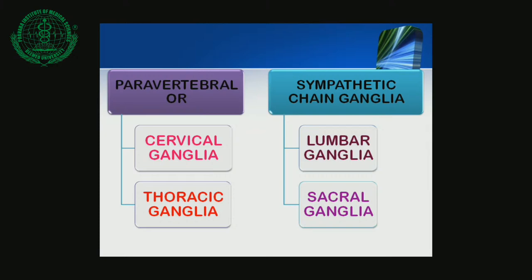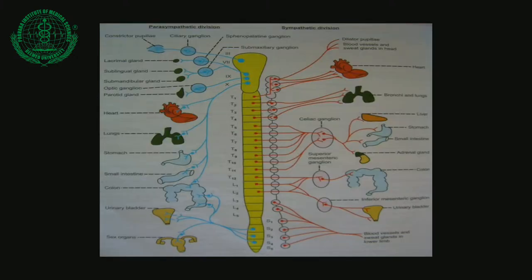The Middle Cervical Ganglia is formed by the fifth and sixth cervical ganglia. The pre-ganglionic fibers arise from the T1 segment. The post-ganglionic fibers supply sweat glands, thyroid gland, and parathyroid gland. It also sends fibers to the heart via the middle cervical sympathetic nerve and cardiac plexus.